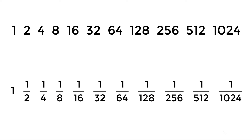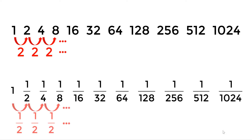A geometric series is a sequence of numbers having a constant ratio between elements. For example, the first series doubles the numbers as it goes, and the second series is reduced by half.